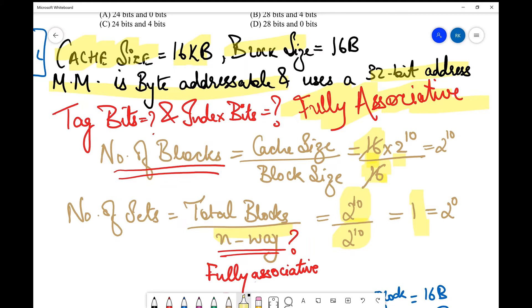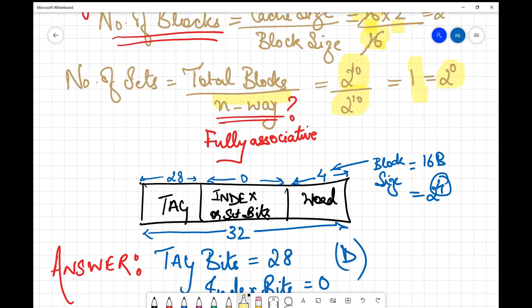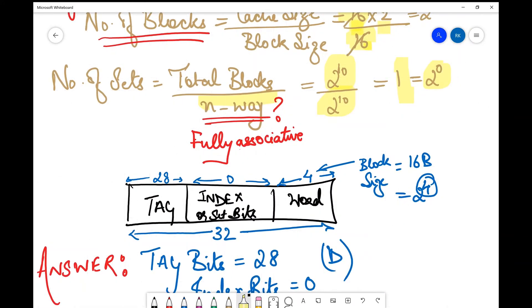Therefore, what will happen over here is when you divide the same thing with the same denominator, you are eventually going to get one set. So basically you are mapping everything into a single set. That is what is happening over here. Now one can be represented as 2 to the power 0, right? Therefore, number of bits required to represent number of sets are zero, because there is only one set. We don't need to differentiate between different sets over here.